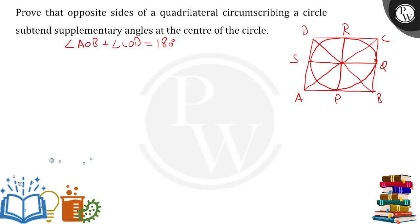Since I have joined these points, I will be naming all of the angles. The angles I am giving are: this is 1, this is 2, this is 3, this is 4, 5, 6, 7, and finally 8. O is the center. We are dealing with the tangent part.